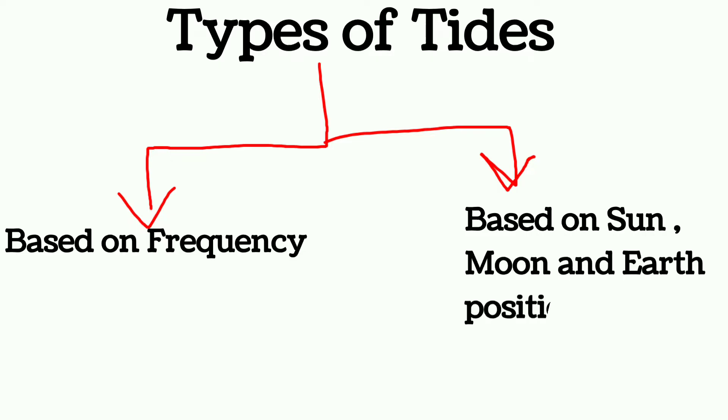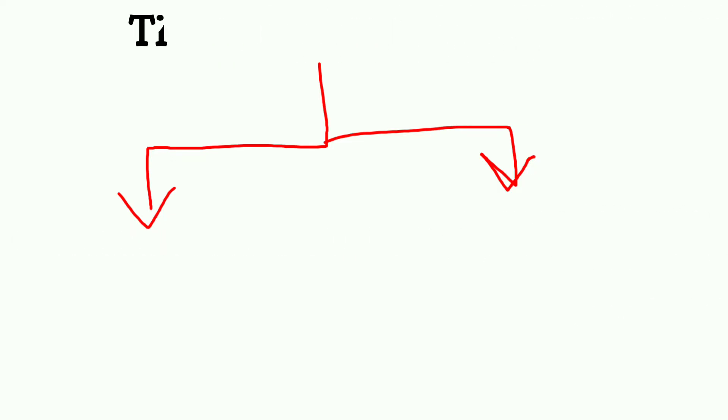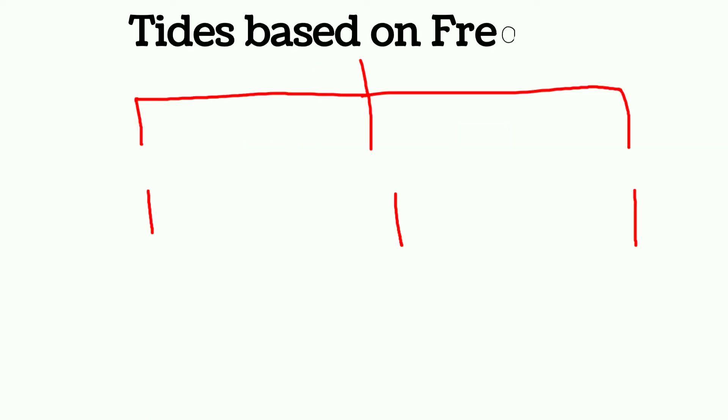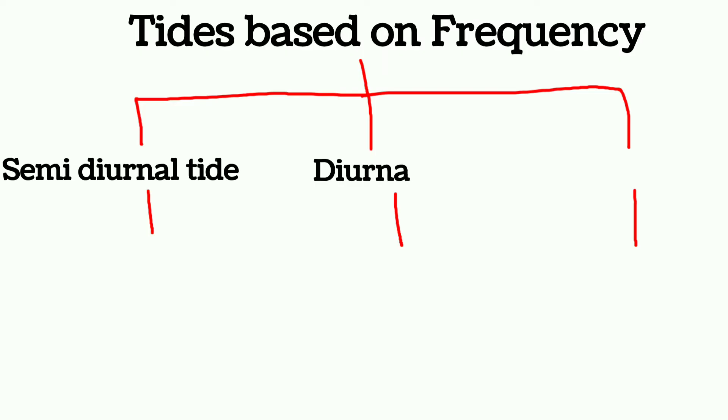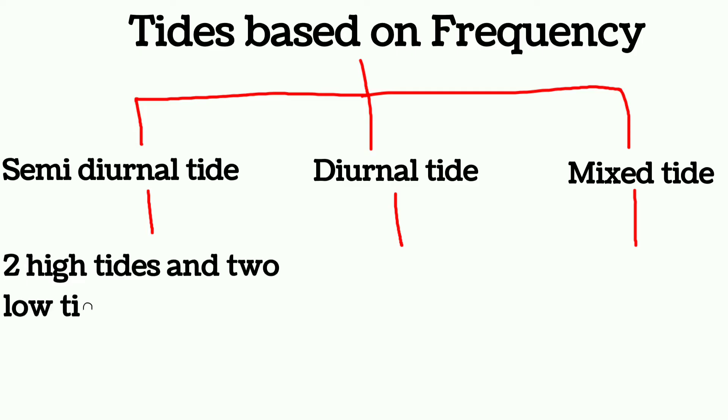First is semi-diurnal tide, second is diurnal tide, and third is mixed tide. Semi-diurnal tide in which two high tides and two low tides occur each day, whereas in diurnal tide, one high and one low tide each day.